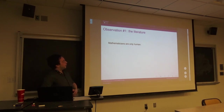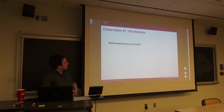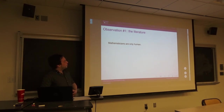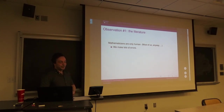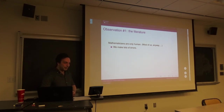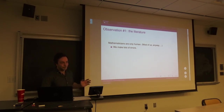I'm going to make three observations about the state of the mathematical community. The first is about the mathematical literature — the papers we publish. Most of what I'm going to say boils down to the fact that mathematicians are really human. We make lots of errors and those errors end up getting published — sometimes typos, sometimes false assumptions, and sometimes something really fundamental that you only discover after 500 people have cited your paper.